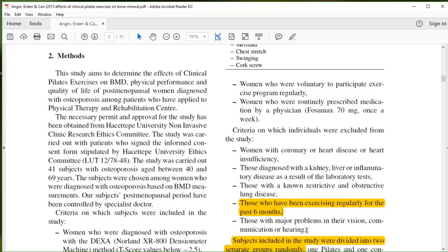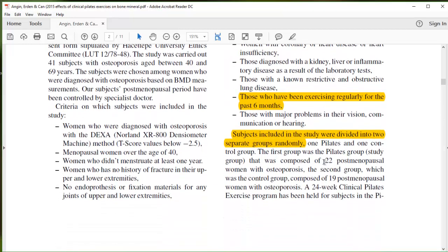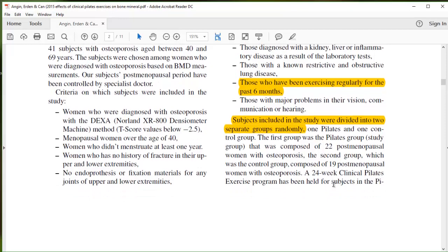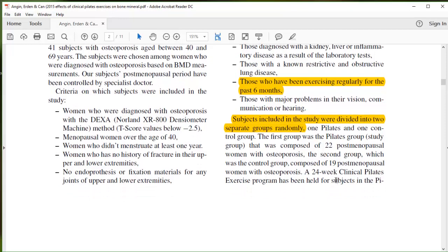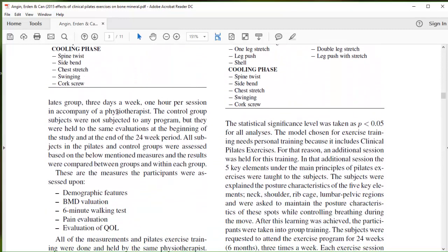They're screening out the sicker patients. So even though sicker patients could have benefited from this, they wanted generally healthy patients to be included in the study. And so they had the Pilates group and then they had the control group. And so the control group, we want to look through the methods right quick here and see what happened with the control group to see they were not subjected to any program but they had the same evaluation. So they were a true control group.